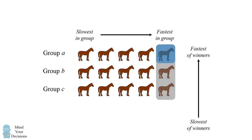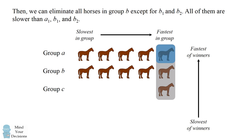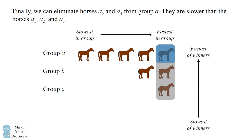We can continue this logic and eliminate all horses in group C except for the fastest horse, C1 — all others are slower than A1, B1, and C1. In group B, we can eliminate all horses except the two fastest, B1 and B2 — the horses in third, fourth, and fifth place in group B can be eliminated. From group A, we can eliminate the fourth and fifth fastest horses, since they are slower than the top three horses within their own group.